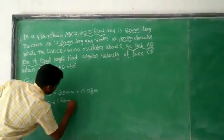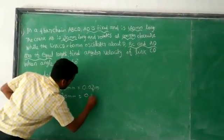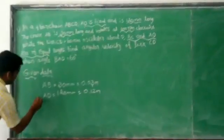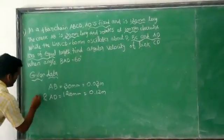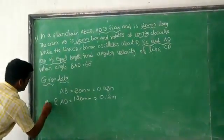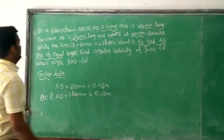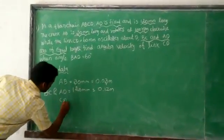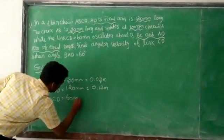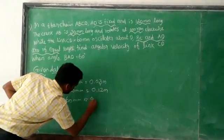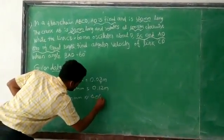AB is 30 mm which is equivalent to 0.03 meter. BC and AD is equal to 120 mm is equal to 0.12 meter, and CD is 60 mm which is 0.06 meter.